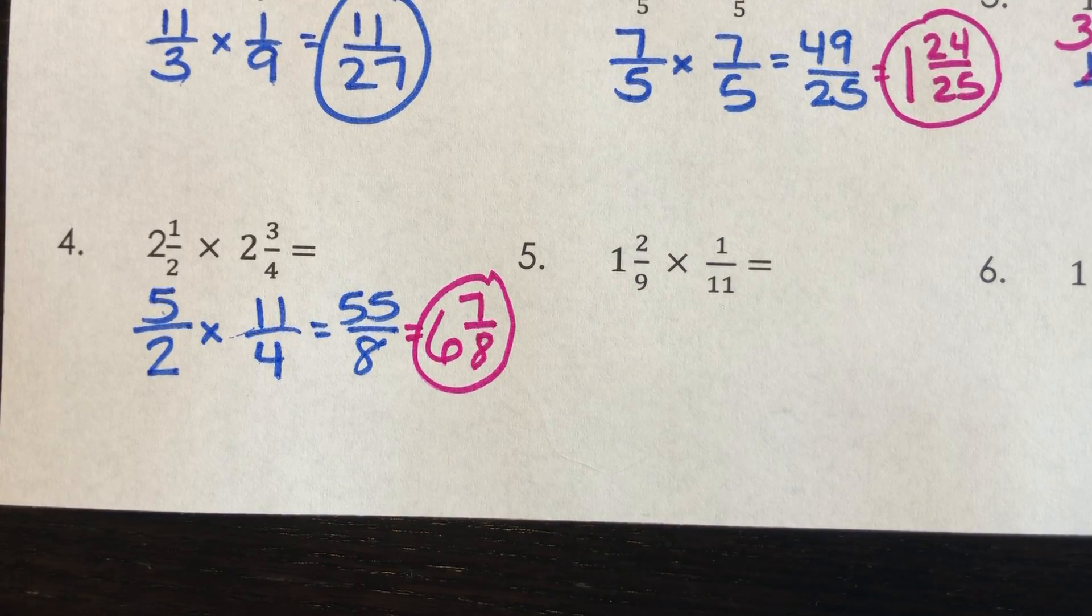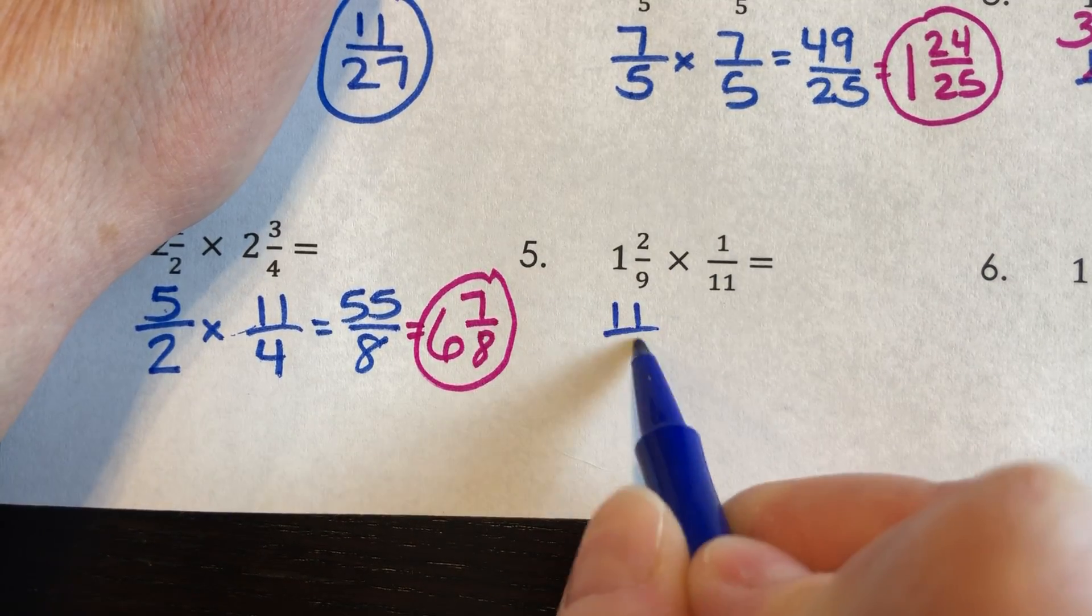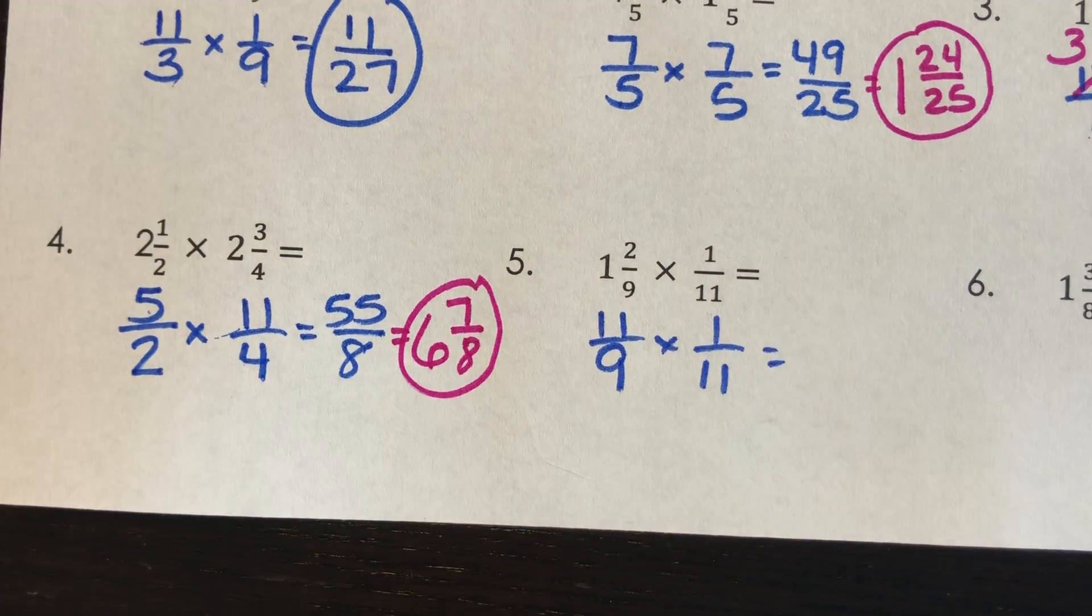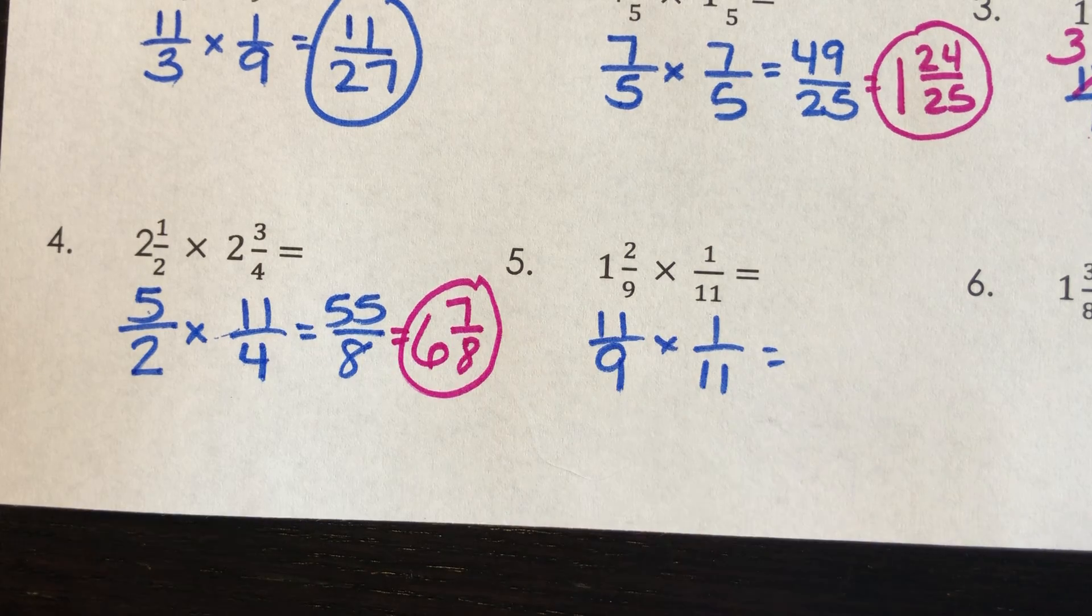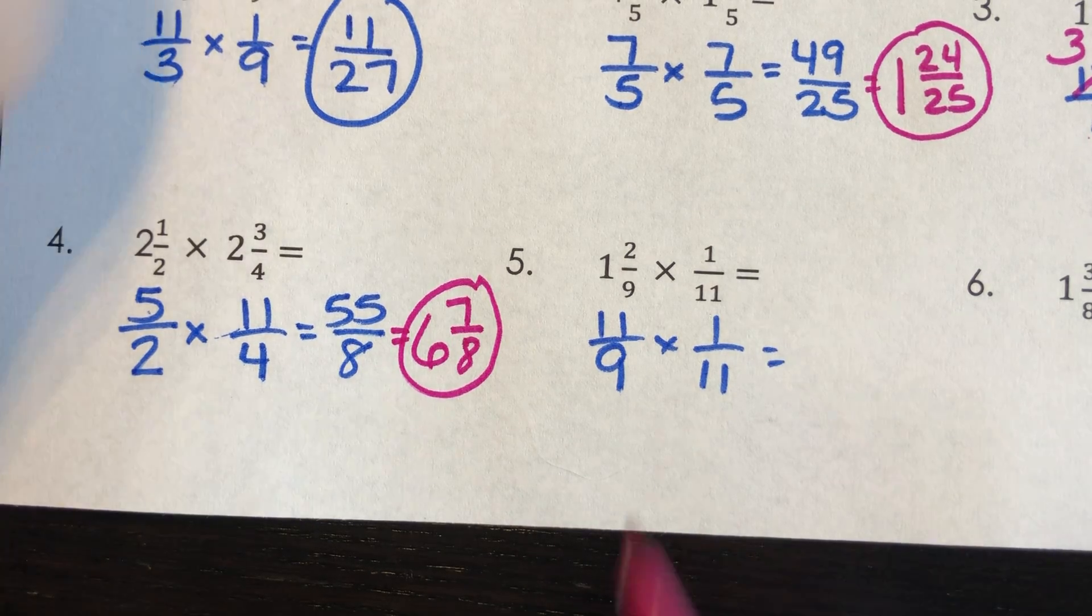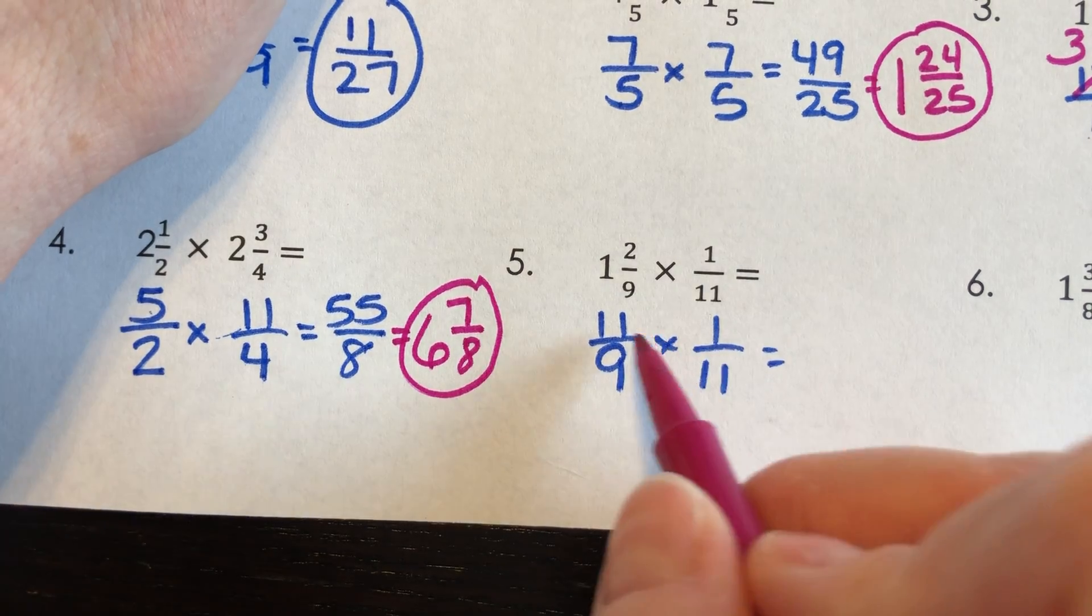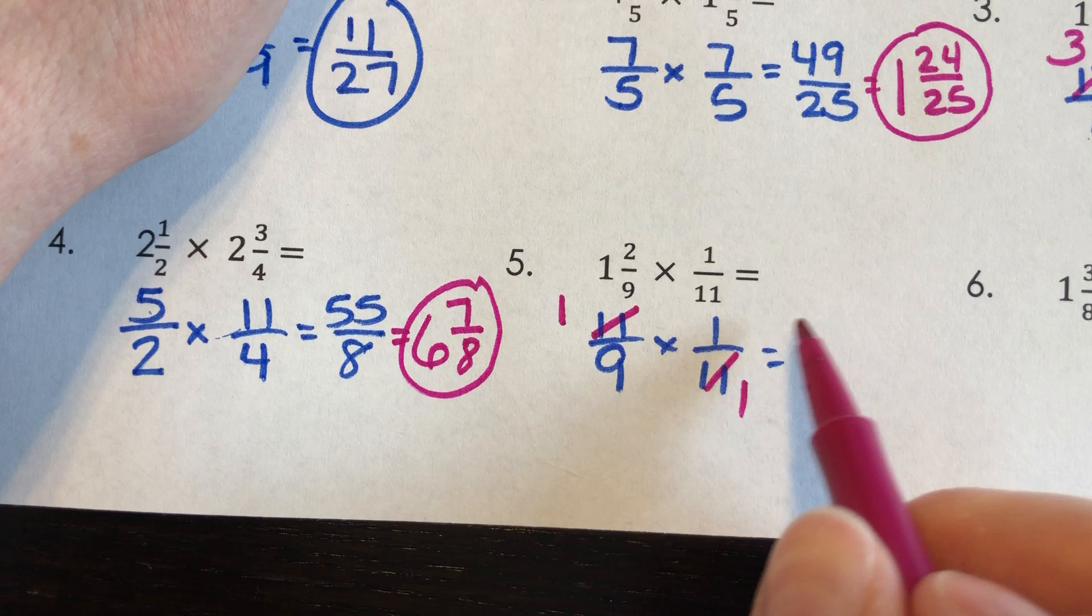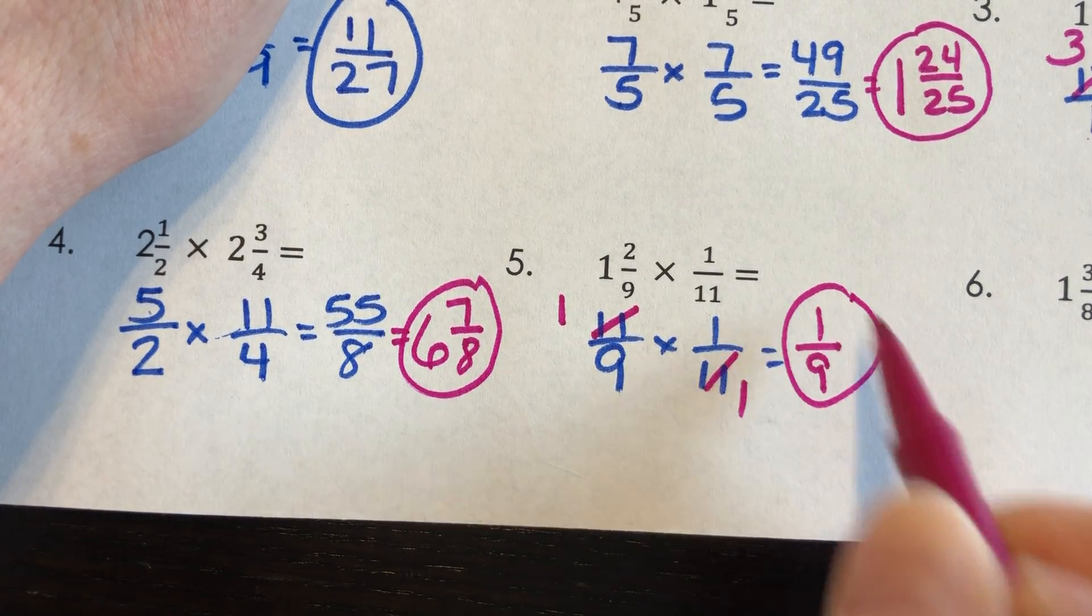Number 5. 1 2/9 times 1/11. I need to go ahead and change this into improper. 9 times 1 is 9 plus 2 is 11/9 times 1/11. I didn't have to change that, right? It's already a regular old fraction. And I do notice that I have 11 diagonal from one another. That means the largest number that will divide into 11 and 11 is 11. And any number divided by itself is 1. So 1 times 1 is 1 and 9 times 1 is 9. So 1/9 is what you should have.